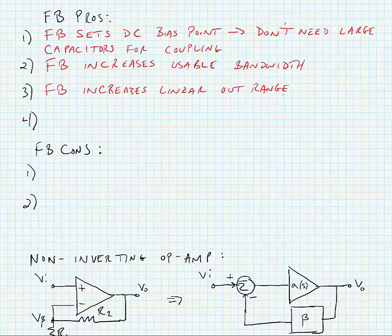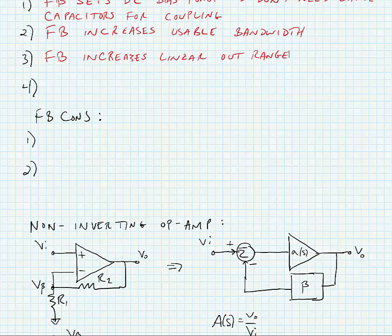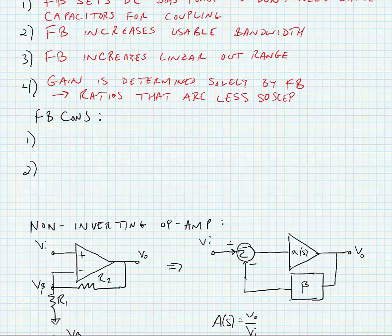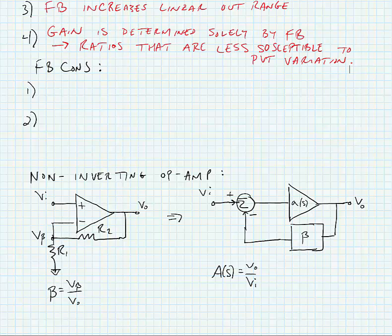We give our op-amp a well-defined but smaller gain. And finally, our gain is determined solely by feedback. This is good because we use ratios that are less susceptible to PVT variations. So we get a very precise gain, but not a very large gain.